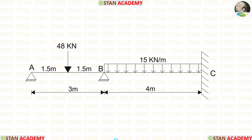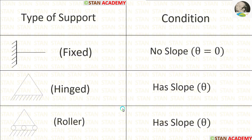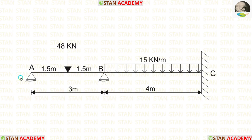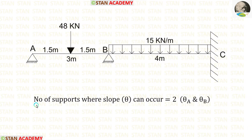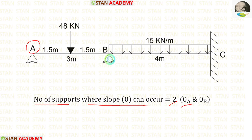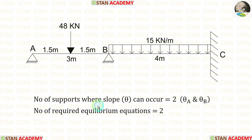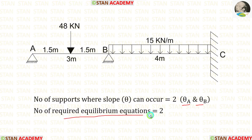In the slope deflection method, we have to check the number of supports where slope can occur. In a fixed support, there will be no slope. In a hinged support or roller support, there will be slope. In this beam, points A and B are hinged supports, so the number of supports where slope can occur is 2. At point A there is theta A, and at point B there is theta B. So in this analysis, there are two unknowns: theta A and theta B. If we calculate these two unknowns, we can easily find the final moments.